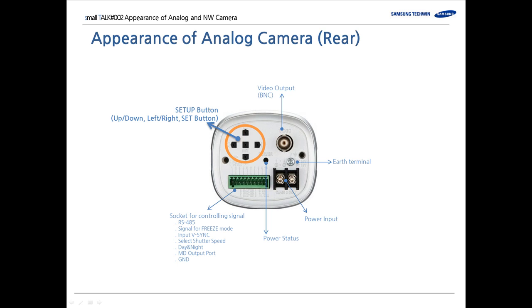Through the main menu, you can configure settings such as exposure, backlight, special functions, and so on. This part is for video output, where you have to connect the coaxial cable.